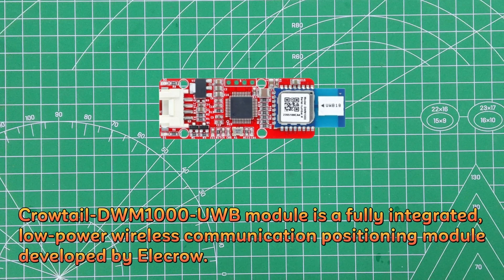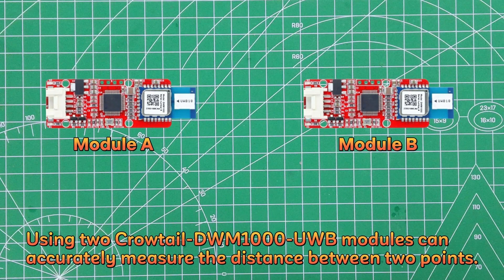Crowtail DWM-1000 UWB module is a fully integrated, low-power wireless communication positioning module developed by Elikro. Using two Crowtail DWM-1000 UWB modules can accurately measure the distance between two points.